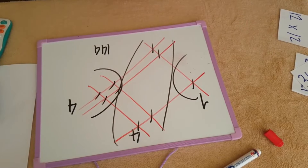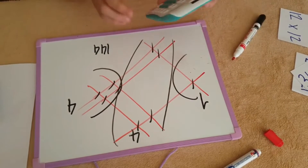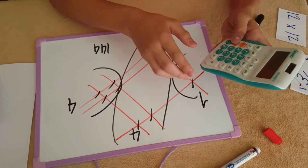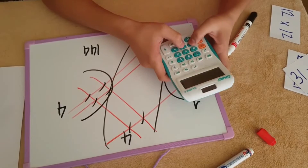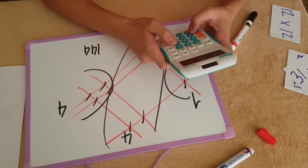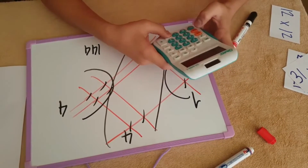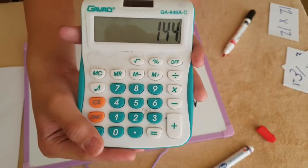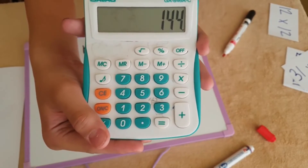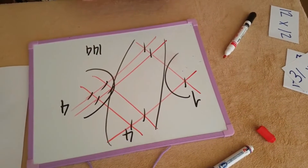For proof, we'll multiply it in a calculator. 12 times 12 equals 144. The exact answer.